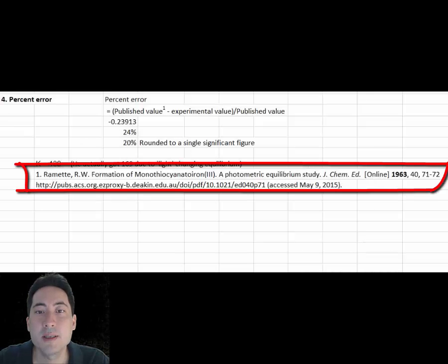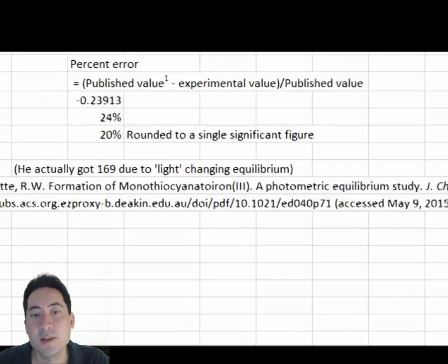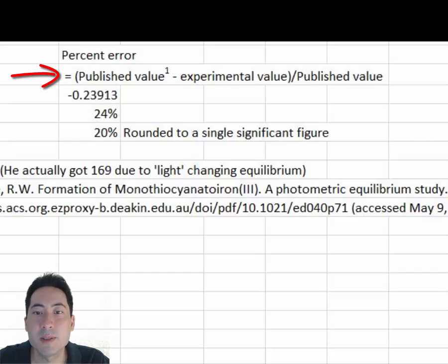I am using the American Chemical Society referencing style to reference the published value. Substituting the experimental and published values into the equation for percent error and rounding to one significant figure gives me a final 20% error.